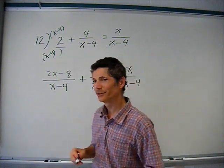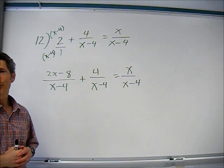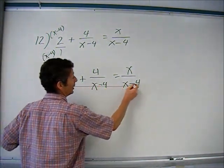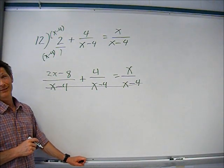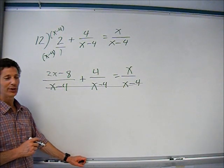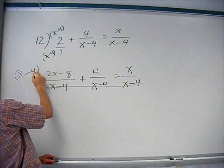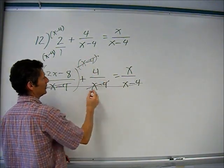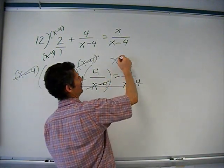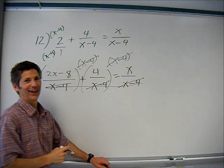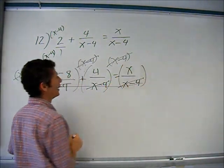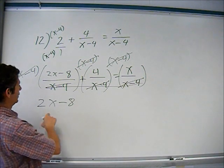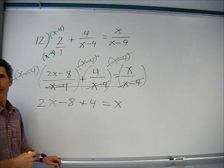This is kind of like problem one — I've got an annoying denominator. Since they're all the same, I can get rid of all the denominators by multiplying everything by x minus 4 over one. Each term times x minus 4 cancels those denominators. I'm left with the numerators: 2x minus 8 plus 4 equals x. Now it's trivial.